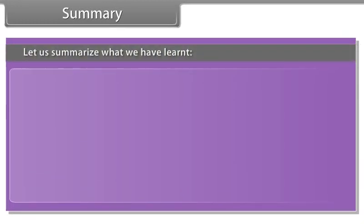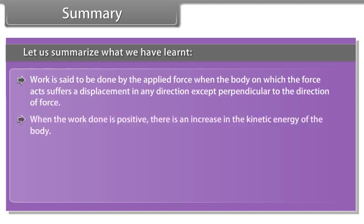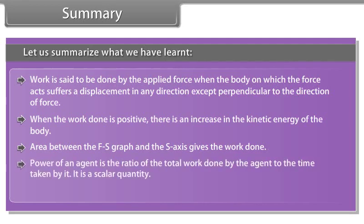Let us summarize what we have learned. Work is said to be done by the applied forces when the body on which the force acts suffers a displacement in any direction except perpendicular to the direction of force. When the work done is positive, there is an increase in the kinetic energy of the body. Area between the F-S graph and the S axis gives the work done. Power of an agent is the ratio of the total work done by the agent to the time.